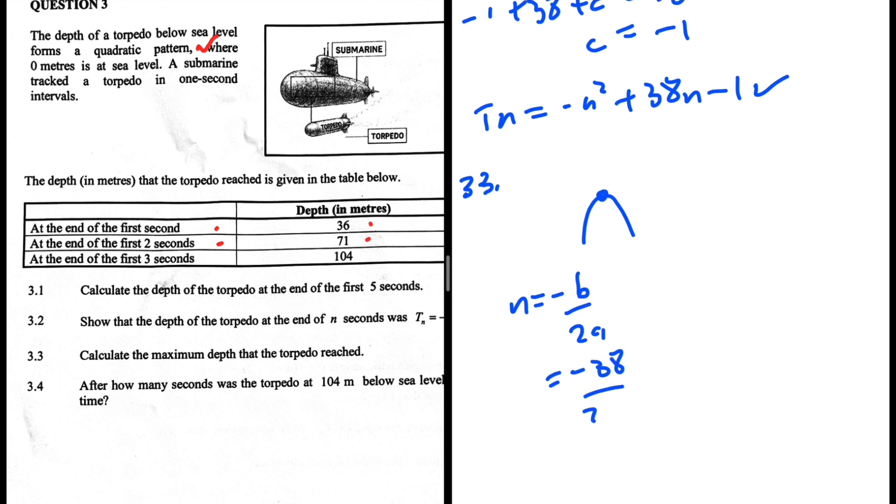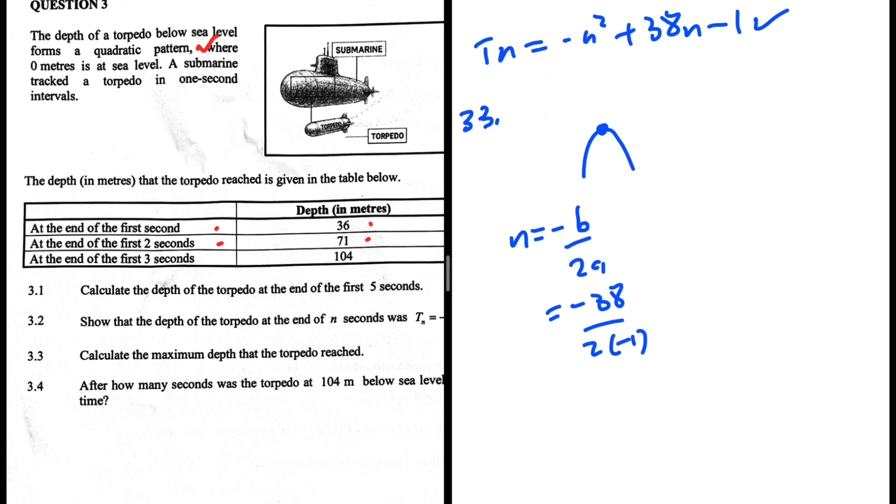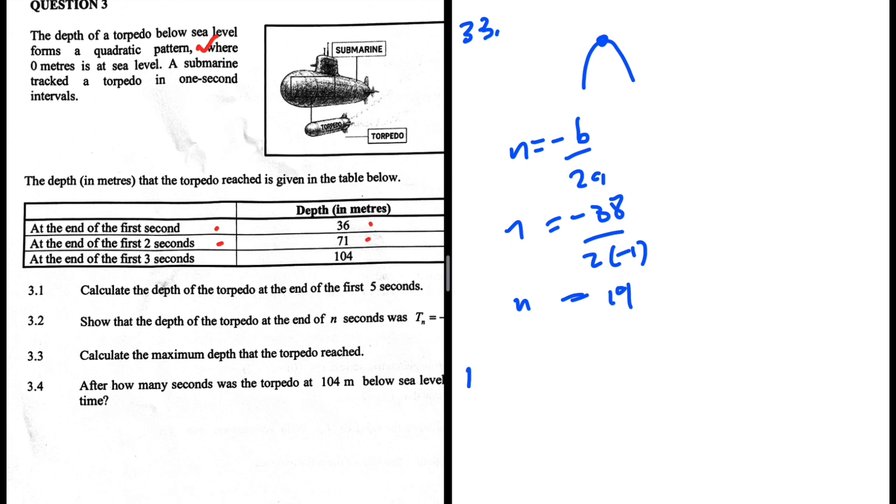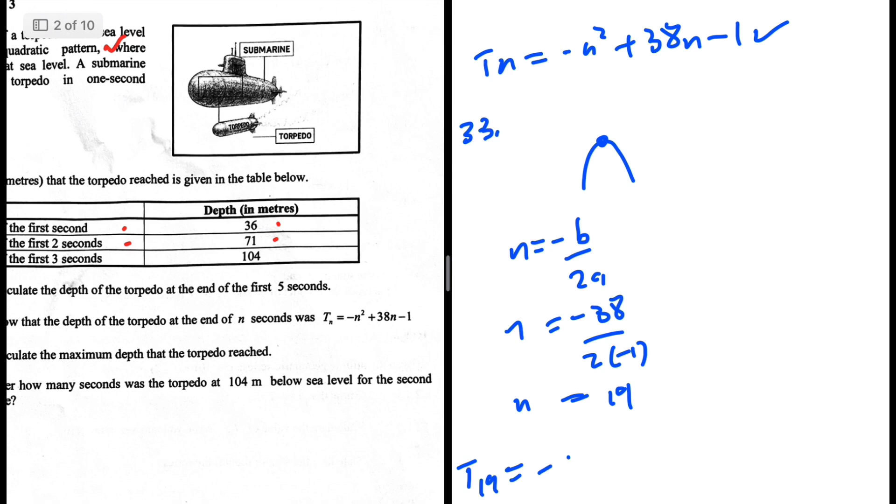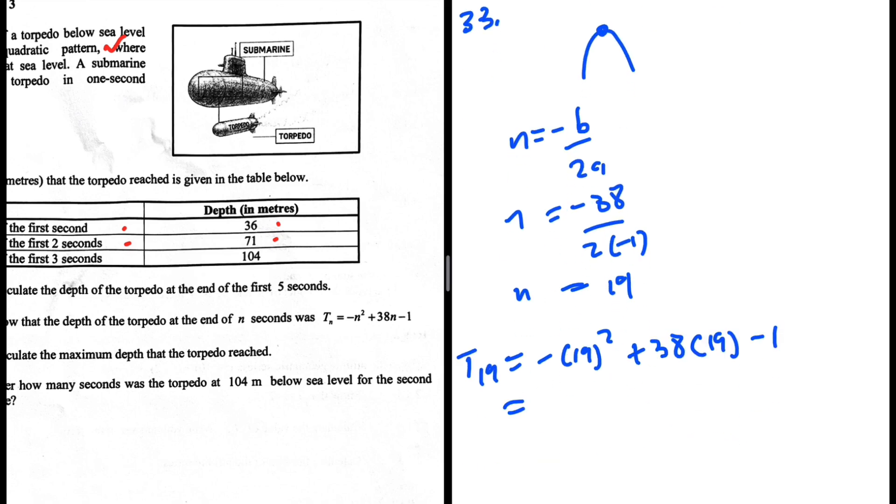This equals minus 38 divided by 2 times minus 1, which is 38 divided by 2, which is 19. So n equals 19 is where we have the maximum depth. Therefore T19 equals minus 19 squared plus 38 times 19 minus 1. Let me substitute that in my calculator.